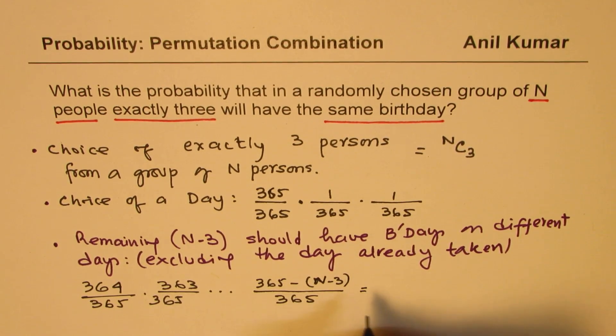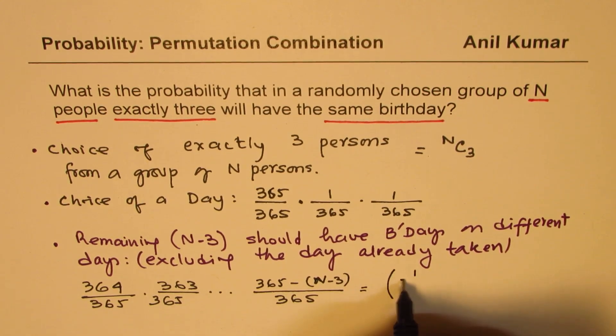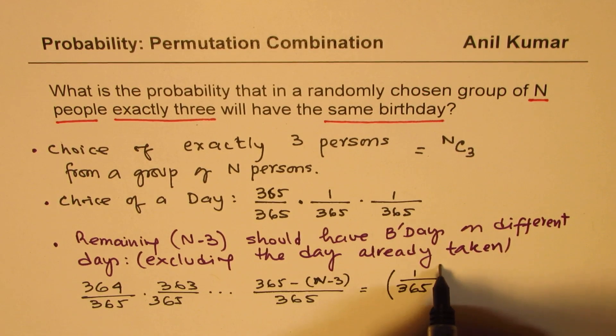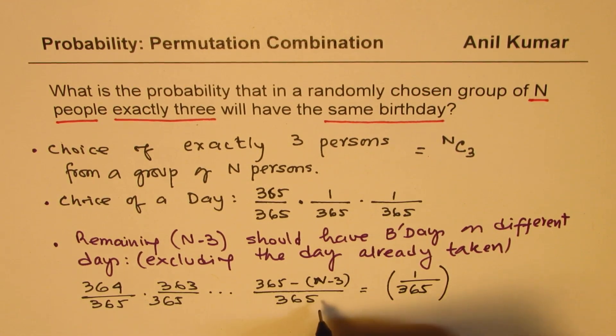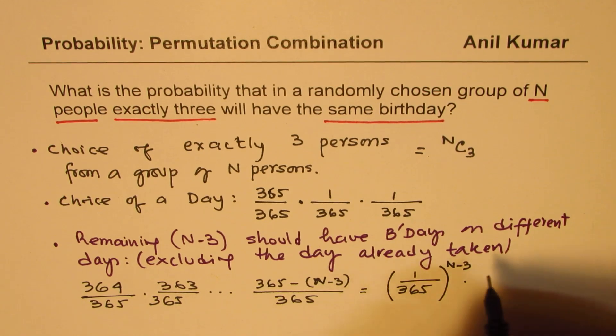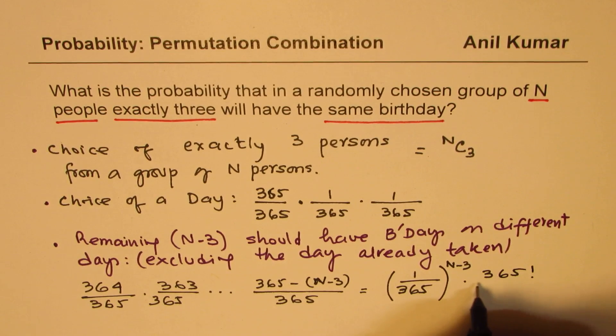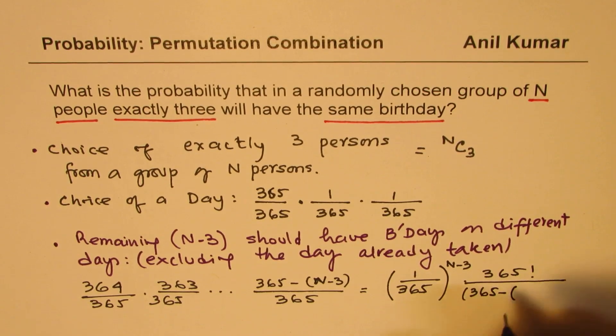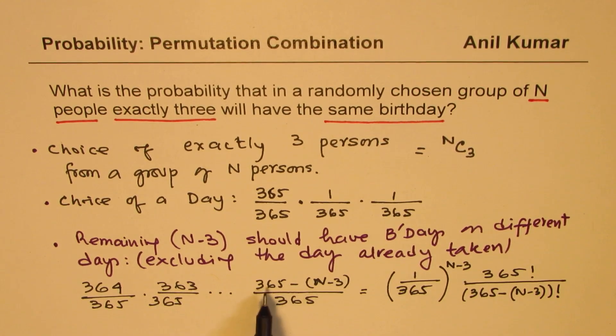Now, that could be written as, so we could write this as 1 over 365 to the power of n minus 3. Now, we could simplify this expression as 365 factorial divided by 365 minus n minus 3 factorial. So we get all these terms, 364 times 363 times so on, till this particular term.